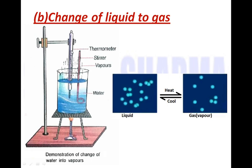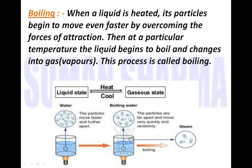The temperature does not rise above 100 degree Celsius. When liquid is converted into gas by absorbing heat, this process is known as boiling. When liquid is heated, its particles begin to move even faster, overcoming the forces of attraction in the liquid state, and at that particular temperature the liquid begins to boil and changes into gaseous or vapour state.